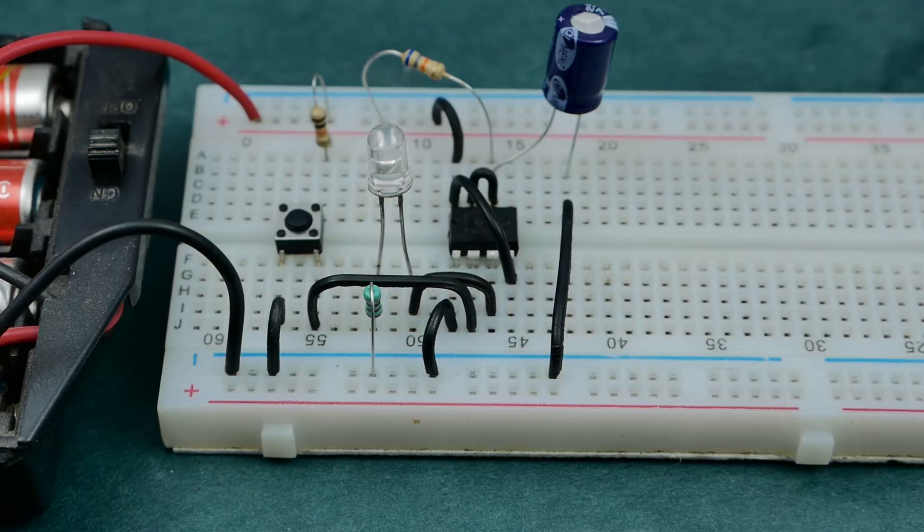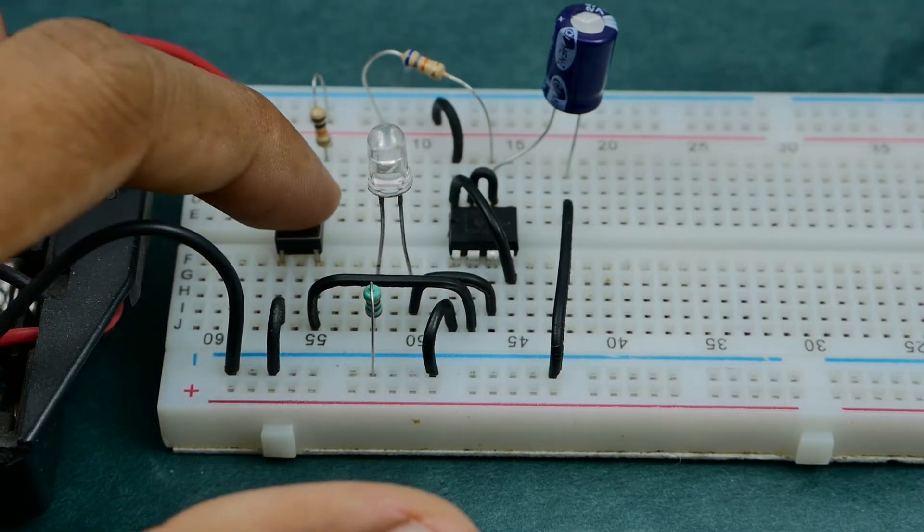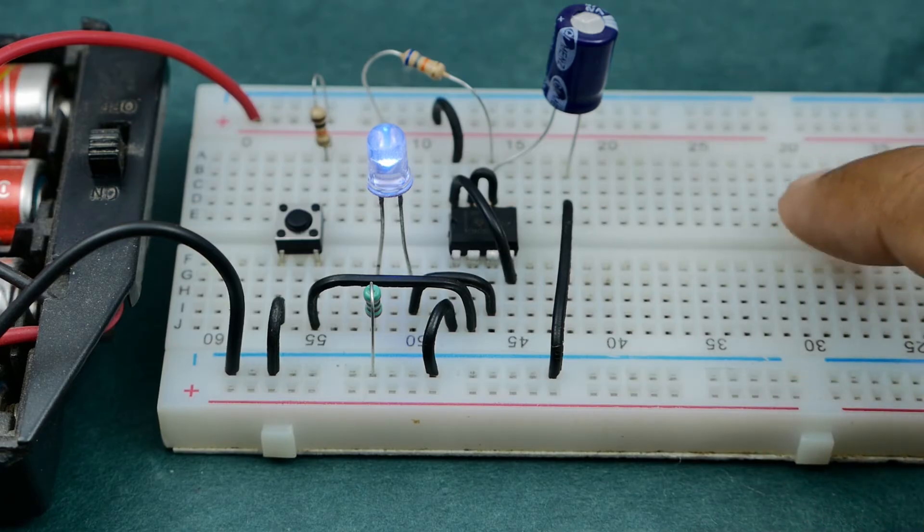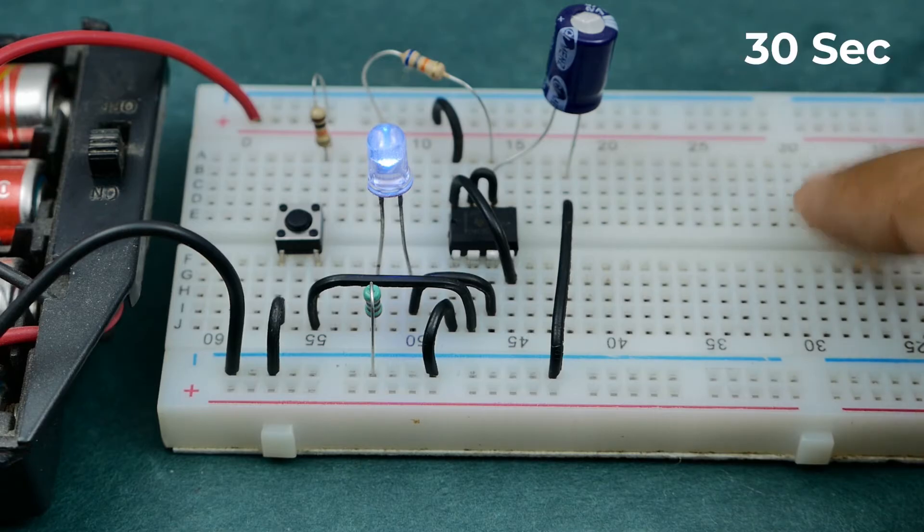The timer is activated by pressing the push button switch and the output turns on immediately. It stays on and turns off only after the specified time has elapsed. Here, I've configured the timer to turn off after approximately 30 seconds.